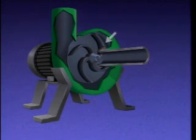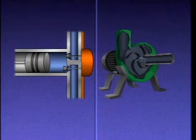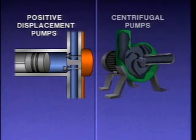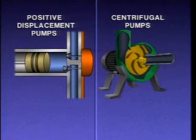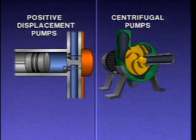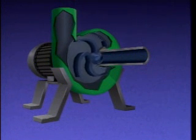Inside the pump, there's a component that physically moves the liquid through the pump, and the type of component used determines the type of pump. Basically, pumps can be grouped into two general categories: positive displacement pumps and centrifugal pumps. A positive displacement pump uses a piston or some other device to push, or positively displace, controlled amounts of liquid through the pump. A centrifugal pump, on the other hand, uses an impeller which creates a centrifugal force to move the liquid. Centrifugal force is the force that develops when something moves or spins in a circular motion. In a centrifugal pump, this force pushes the liquid away from the center of rotation and out of the pump.